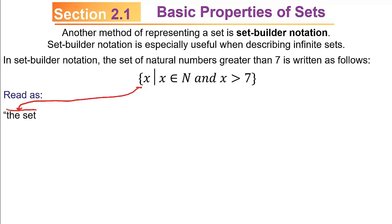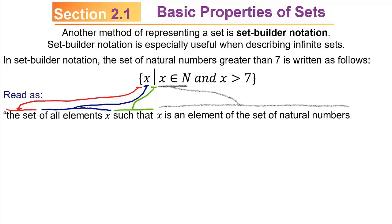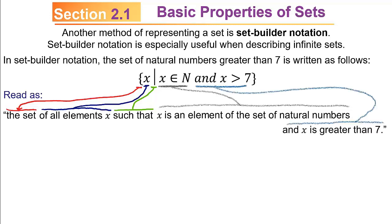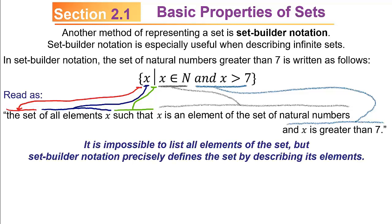Here's how you should read set builder notation. The opening left brace is read as 'the set,' and the x is read as 'of all elements x.' The vertical line is read as 'such that.' Then you read the rest: x is an element of the natural numbers and x is greater than 7. It's simply impossible to list all elements of the set because there are infinitely many of them, but set builder notation precisely defines the set by describing its elements.